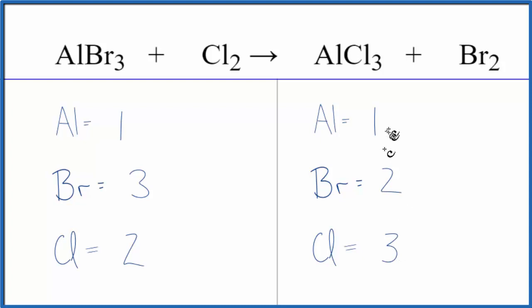It looks like, why don't we try to get the bromines here to an even number? If we can do that, then we can balance these on this side. So I can put a two in front of the AlBr3.